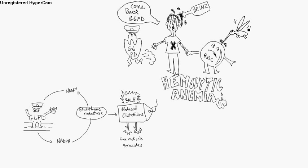G6PD deficiency leads to increased resistance to malaria. That's why it's more common in African Americans, because in Africa there's a high prevalence of malaria, and anything that makes you a little more resistant to malaria is actually selectively advantageous. By the way, remember the malaria bug name is Plasmodium falciparum.